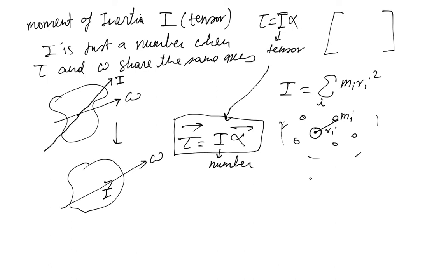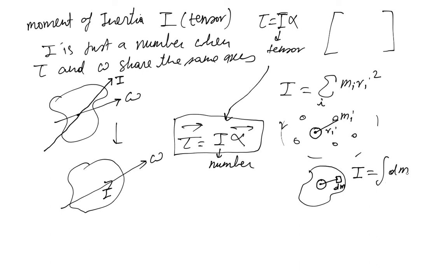You add over all the masses. For a continuous system with a continuous distribution of mass, I is defined similarly: you take a small mass dm, and I becomes the integral of r squared dm over the entire area.